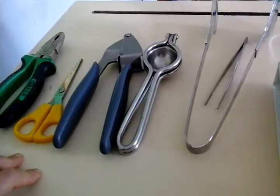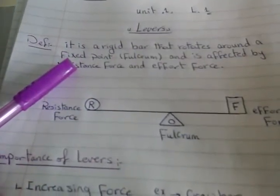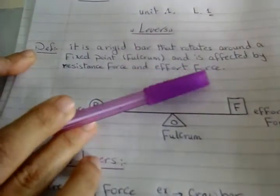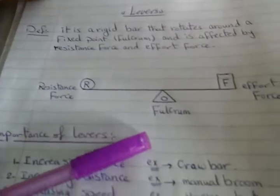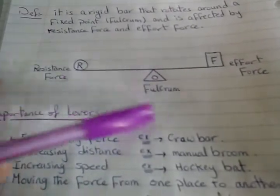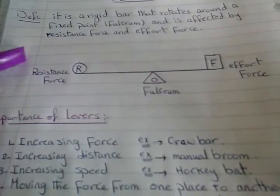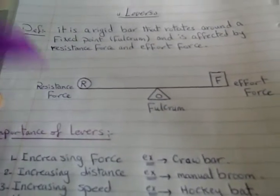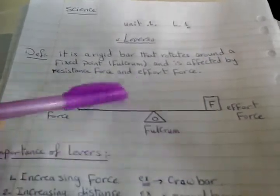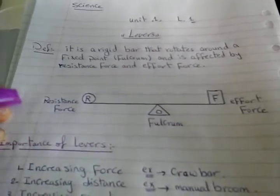Let's talk about the definition of levers. A lever is a rigid bar that rotates around a fixed point called the fulcrum, and is affected by two forces: resistance force and effort force. In a simple figure, the fulcrum is marked as O, effort force as F, and resistance force as R, with the rigid bar connecting them.